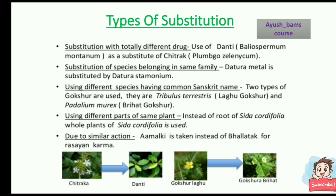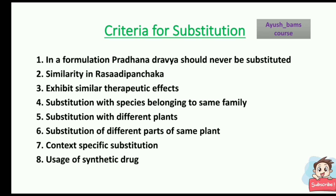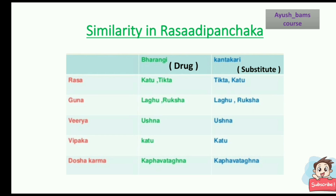You can see pictures of Chitraka, Danti, Gokshura, Laghu Gokshura, and Brihad Gokshura. Criteria for substitution: the Pradhana dravya should never be substituted; similarity in Rasadi Panchaka; exhibit similar therapeutic effects; substitution with species belonging to same family; substitution with different plants; substitution of different parts of the same plant; context-specific substitution; and usage of synthetic drugs. While using substitution, we should keep in mind the effects it could cause.